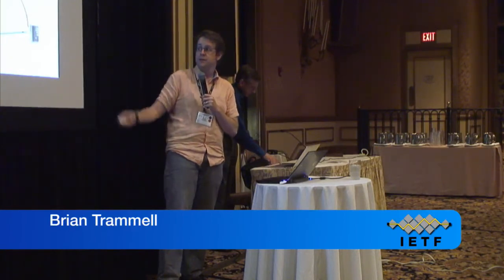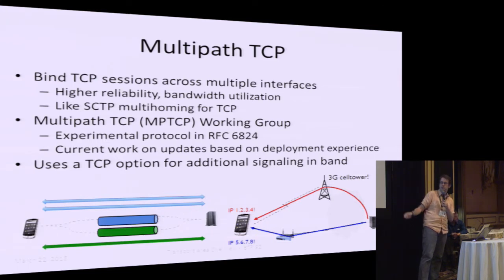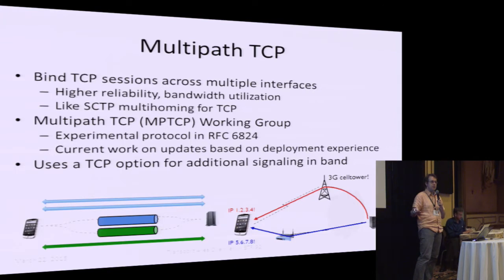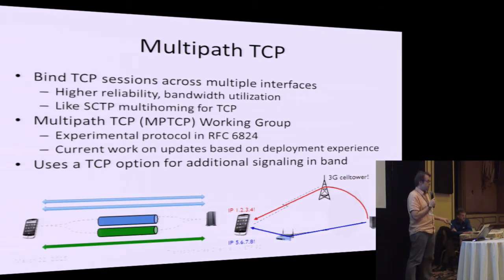The idea behind multi-path TCP is that you can take TCP sessions across multiple interfaces and bind them together. For example, your cell phone talking to a server — connected via Wi-Fi as well as a 3G cell tower. We can bind these two interfaces so TCP sees a single connection over two different lower-layer connections. This increases available bandwidth and provides failover when signal conditions vary wildly. This is an experimental protocol in RFC 6824, with current work for updates based on deployment experience.